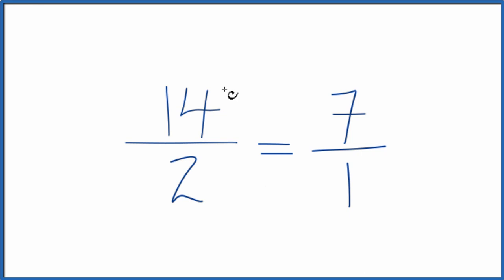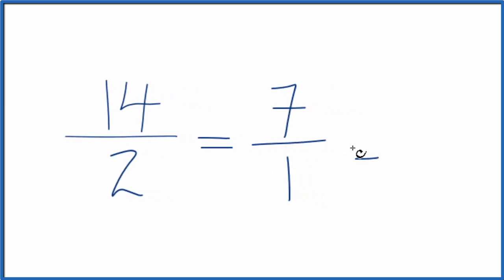So the fraction 14 over 2 can be simplified down to 7 over 1. And since 7 over 1 is just 7 divided by 1, that just gives us 7. So we could just call this 7.